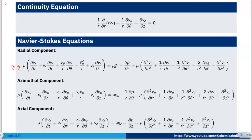The Navier-Stokes equation in the radial direction includes terms: ρ·g_r − ∂p/∂r + μ [∂²v_r/∂r² + (1/r)∂v_r/∂r + (1/r²)∂²v_r/∂θ² − (2/r²)∂v_θ/∂θ + ∂²v_r/∂z²], and similarly for the theta and z directions.